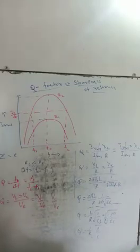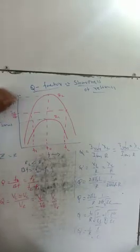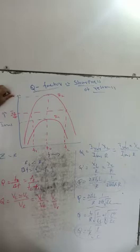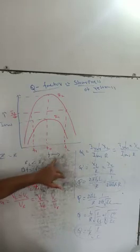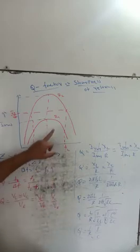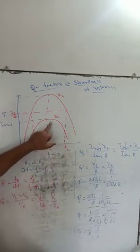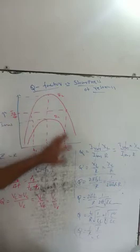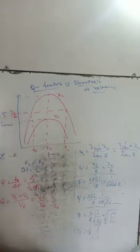Sharpness of resonance. Here the graph is plotted: RMS value of current in the resonance circuit is taken along the y-axis, and frequency of AC is taken along the x-axis. We then get the resonance curves — this is the curve at resistance R1 and this is the curve at resistance R2. These are called resonance curves.